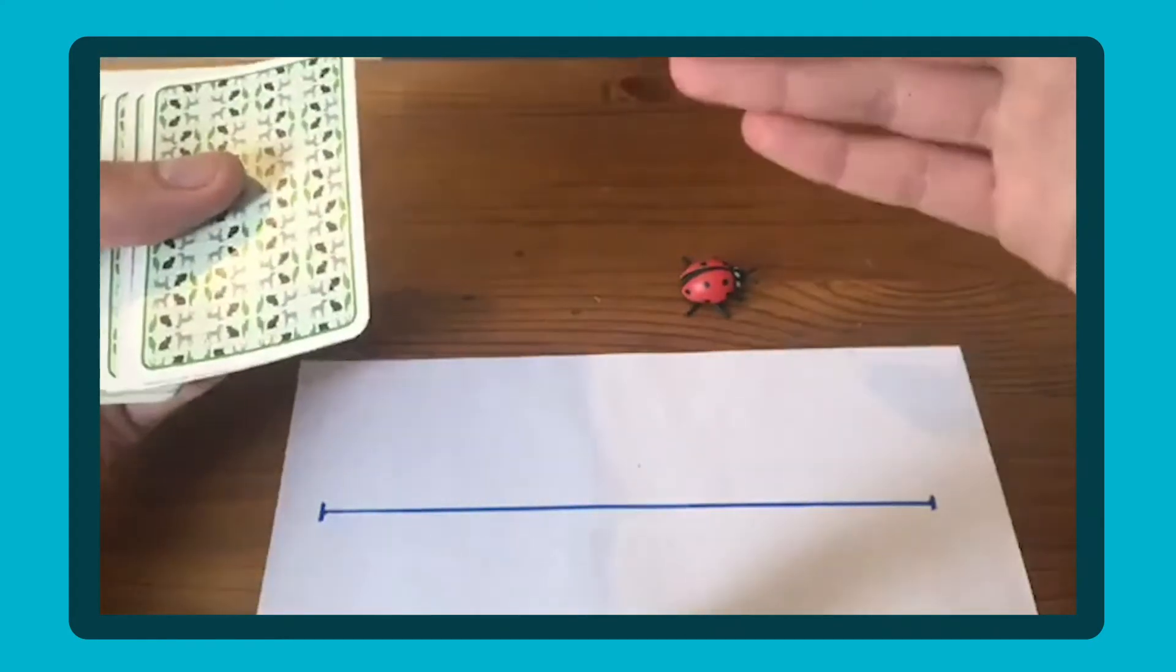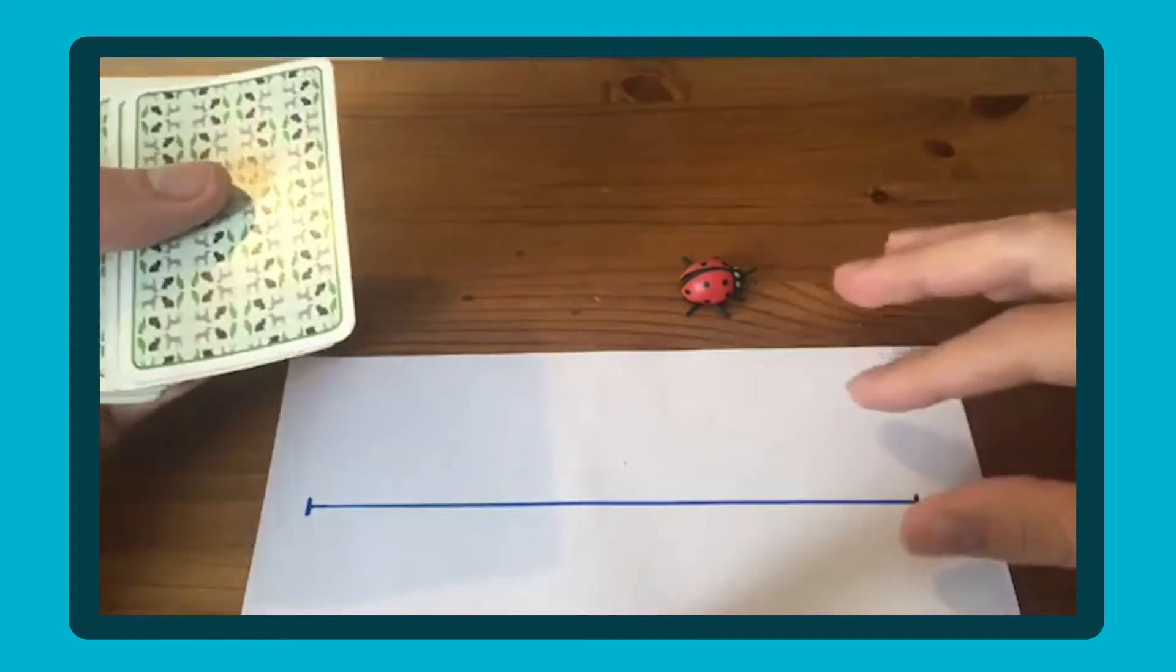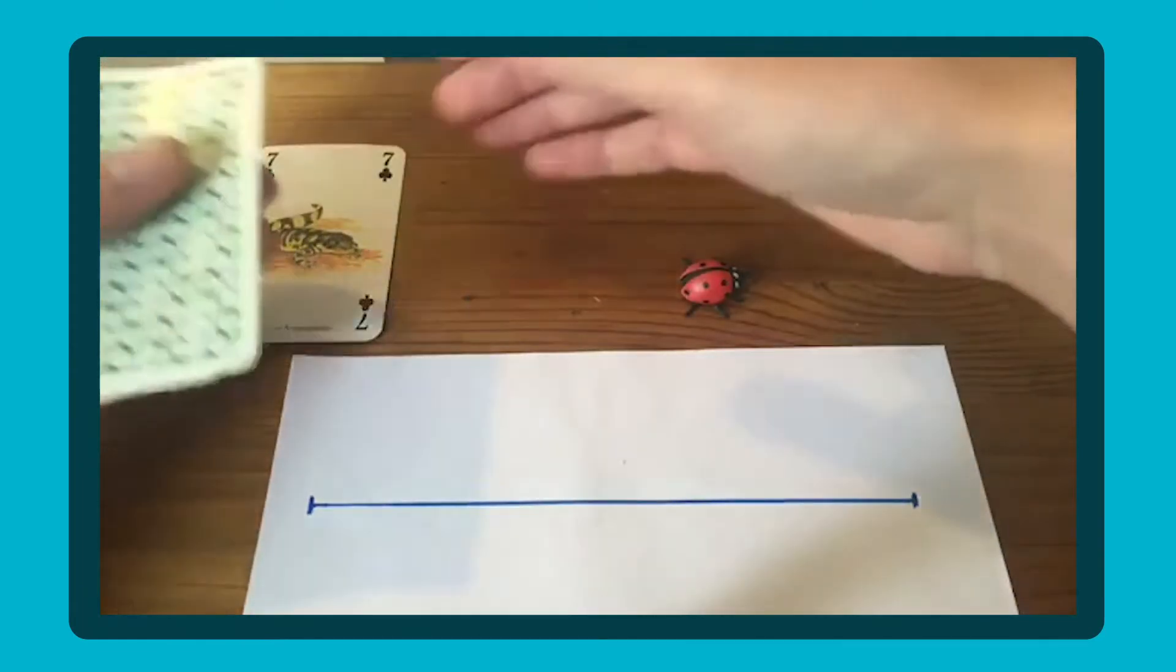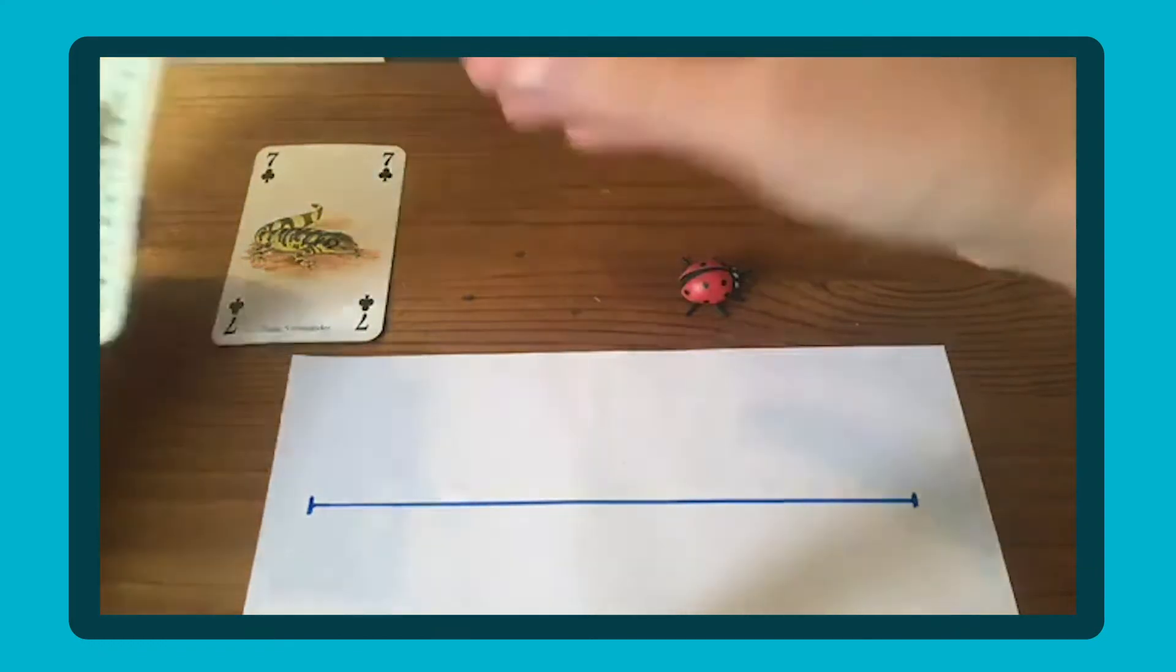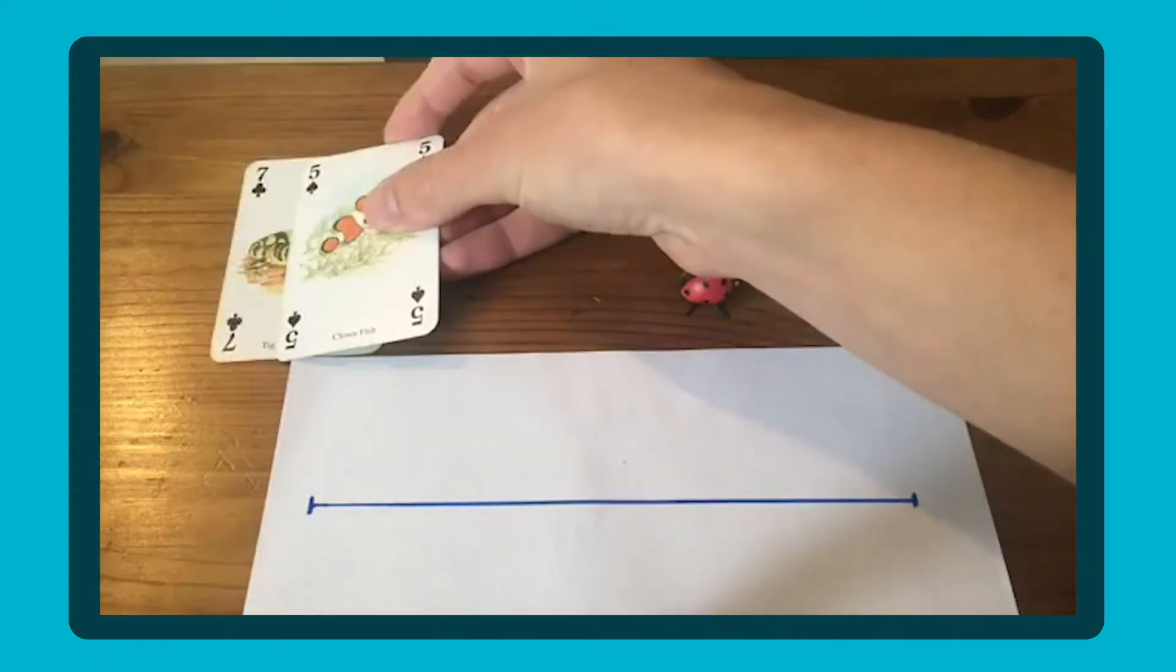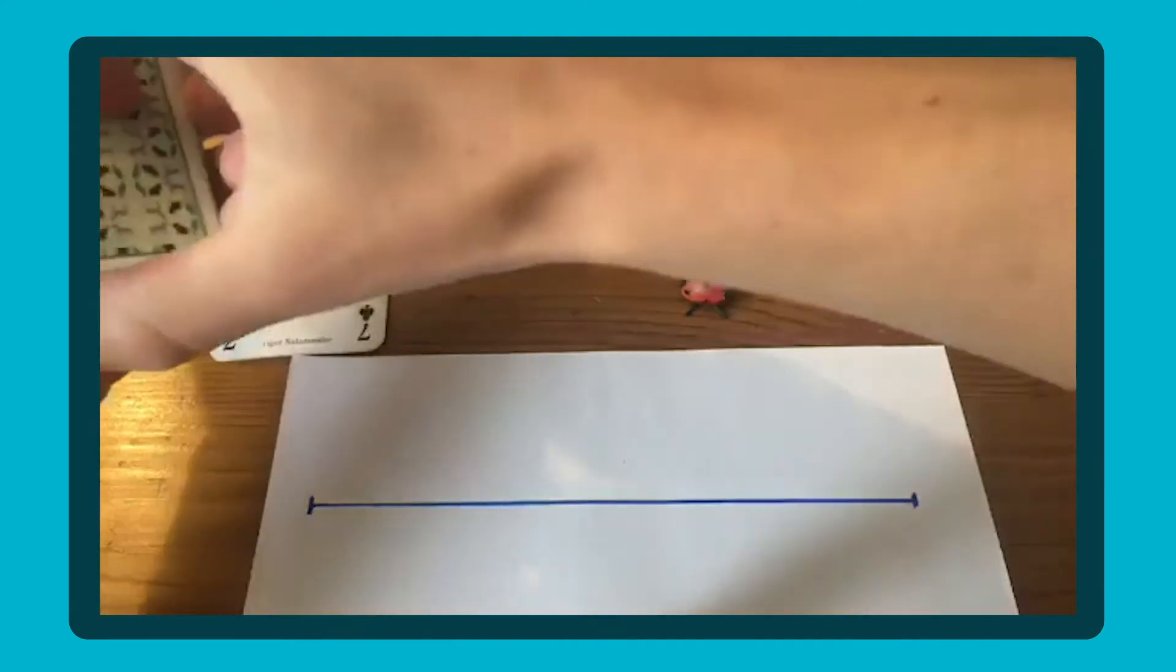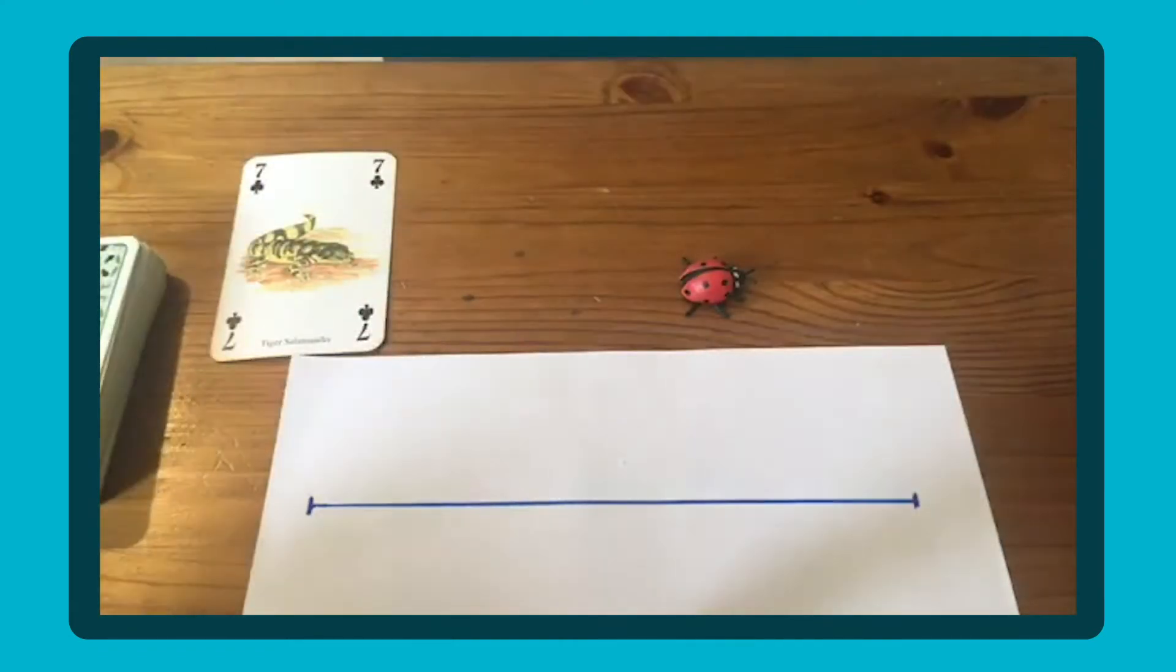Depending on your child's confidence, you could generate a one-digit or two-digit number. I've turned over one card to get seven. I'm going to work with one digit, but you could turn over two and have 75. I'll stick with one digit for now, then roll my dice—I've got three.